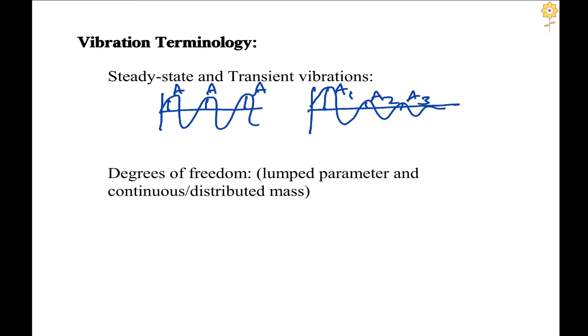Now we have seen what is meant by degree of freedom. Degree of freedom is the minimum number of independent coordinates required to describe the motion of each and every mass in the system.